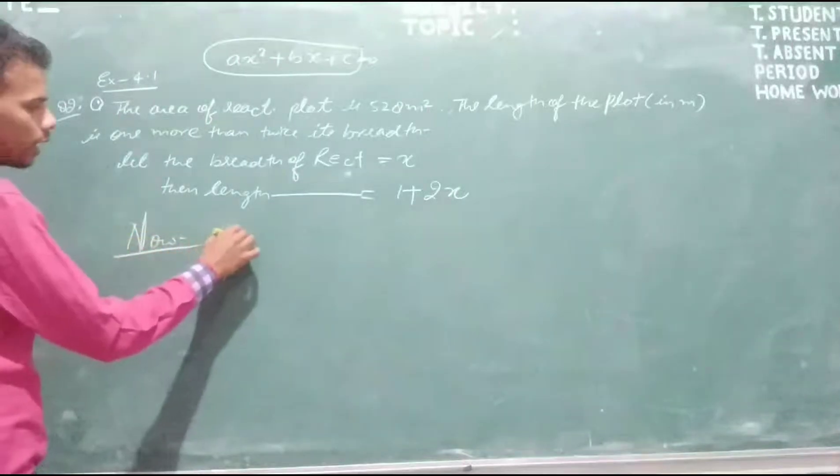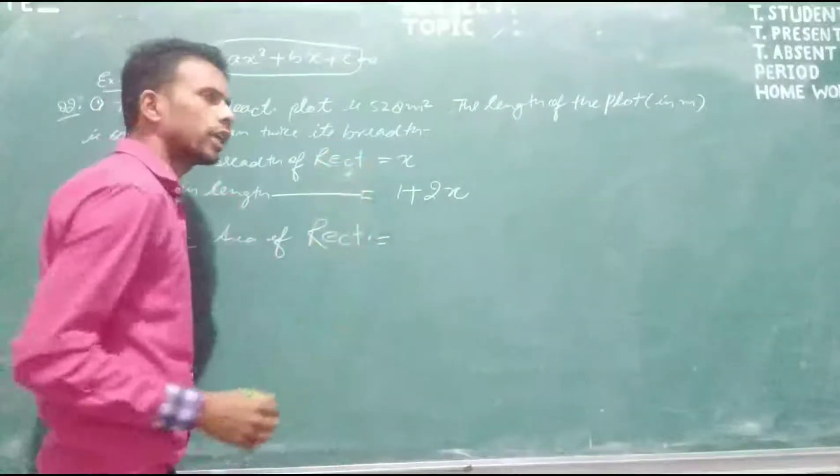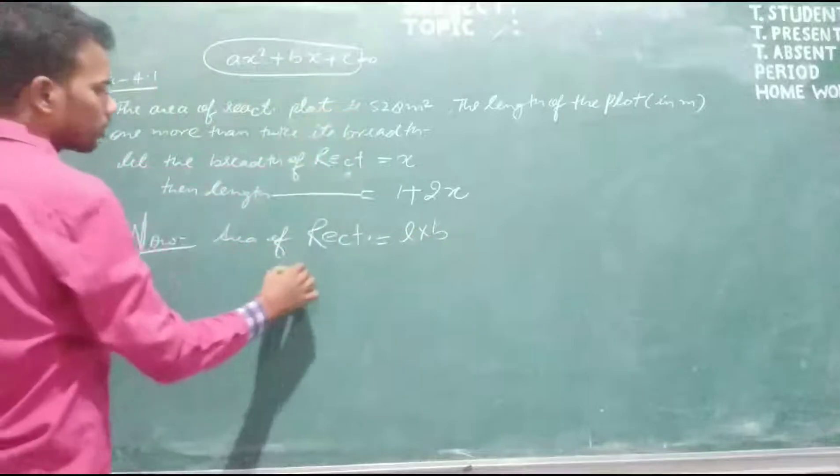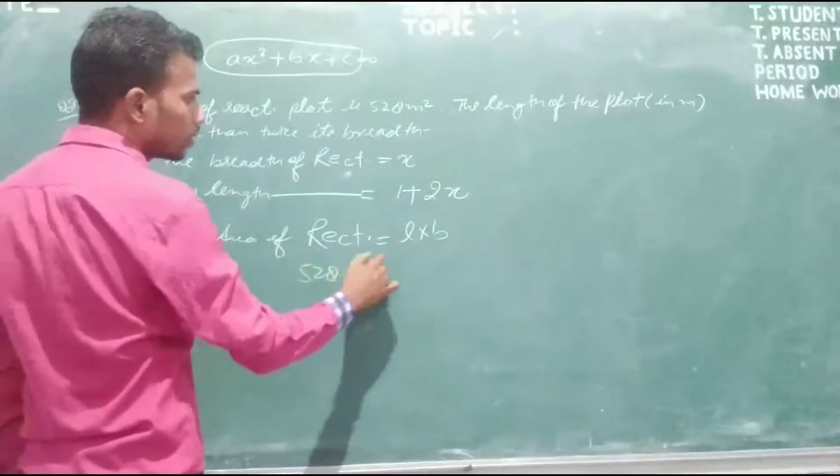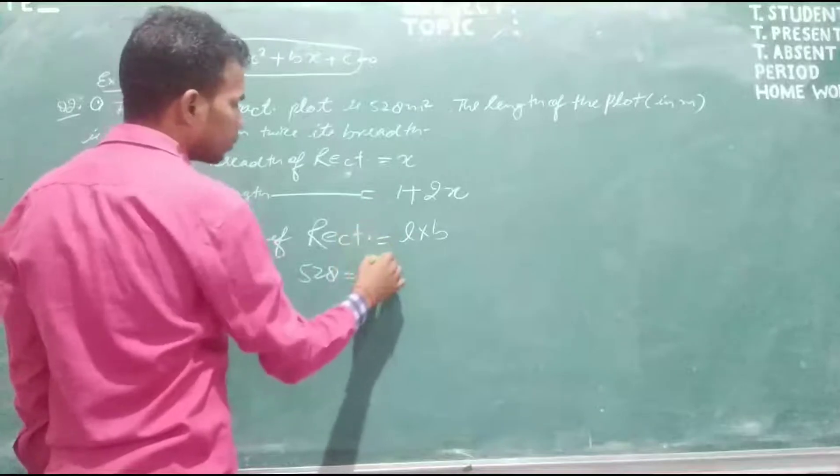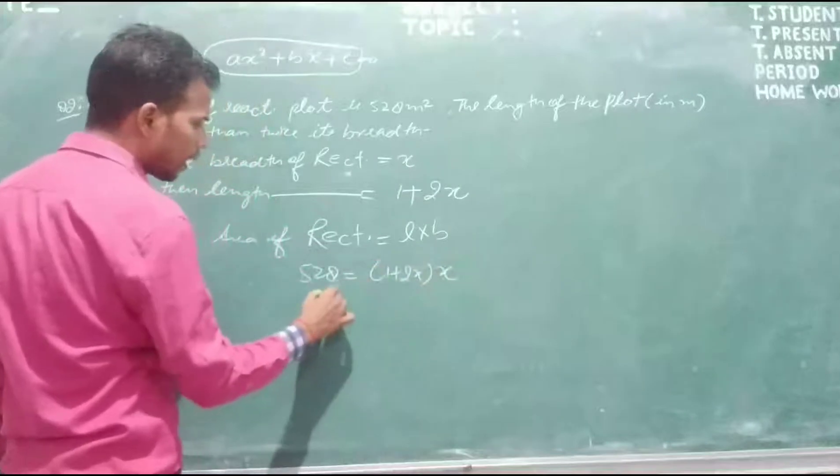Now, area of rectangle, we know that it equals length times breadth. Area of rectangle given is 528. Length is X, sorry, length is 1 plus 2X, and breadth is X. Multiply here.